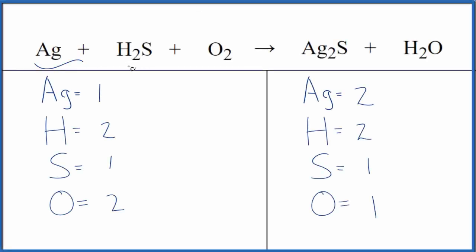Let's balance the equation Ag plus H2S plus O2. Silver plus hydrogen sulfide, and then we have this oxygen gas here. The first thing we need to do is count the atoms up before we balance the equation.